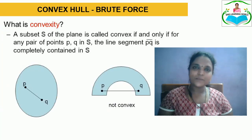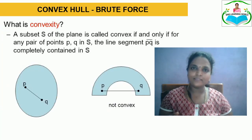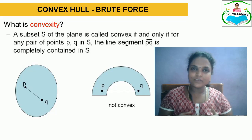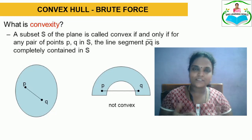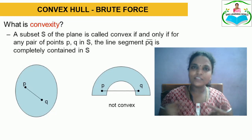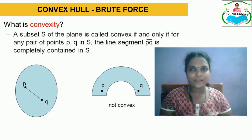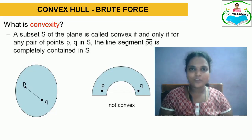What is meant by convexity? When we consider a plane that consists of a sequence of many points which are scattered, and when we create a polygon for that set of all points in the space, for any two points we take from that polygon, the line segment that connects the two points must be completely present inside the plane. If the line comes outside of the polygon, then it is said to be non-convexity.